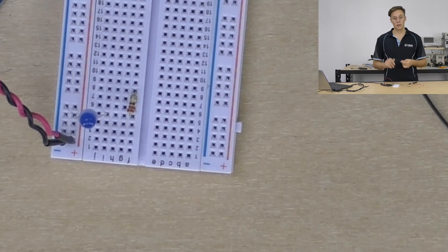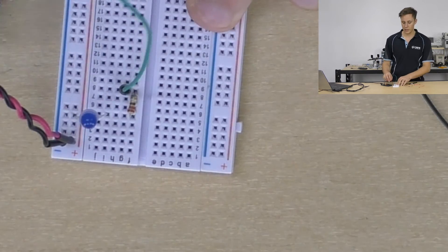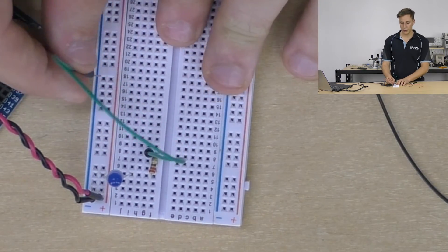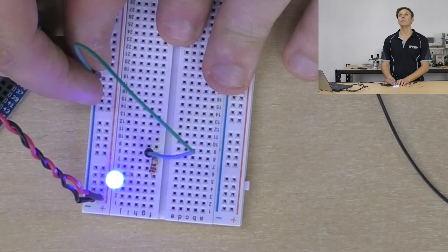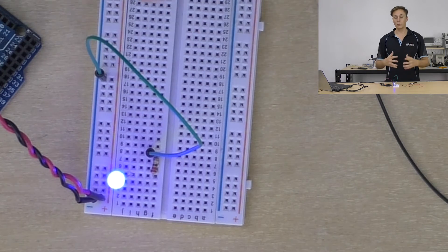I'm going to take another one of these jumper leads and insert it here and when I connect it to ground it lights up fantastic. There's an extremely simple circuit put on a breadboard which is fantastic.